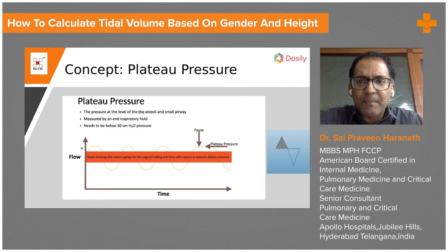With plateau pressure, when a patient has oxygen and air going into the lungs, the alveolar sac enlarges. When the alveolar sac enlarges, pressure is applied to it, and as that pressure comes up in the alveolus it begins to distend.